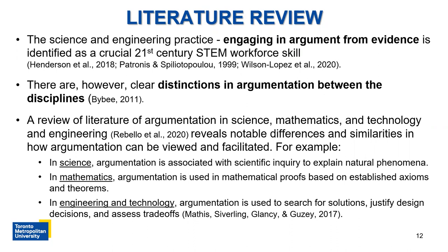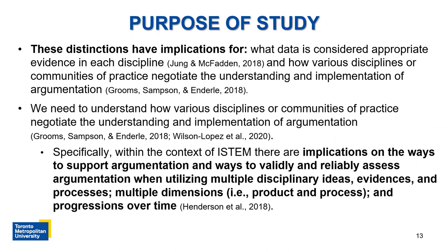In science, argumentation is often associated with scientific inquiry to explain natural phenomena. In mathematics, argumentation is often viewed as having mathematical proofs based on established axioms and theorems. In engineering and technology, argumentation is often used as a means to search for solutions, justify decisions, and assess trade-offs. If we think about these distinctions across disciplines in what might be considered appropriate evidence, we need to understand how various communities of practice negotiate the understanding and implementation of argumentation itself.